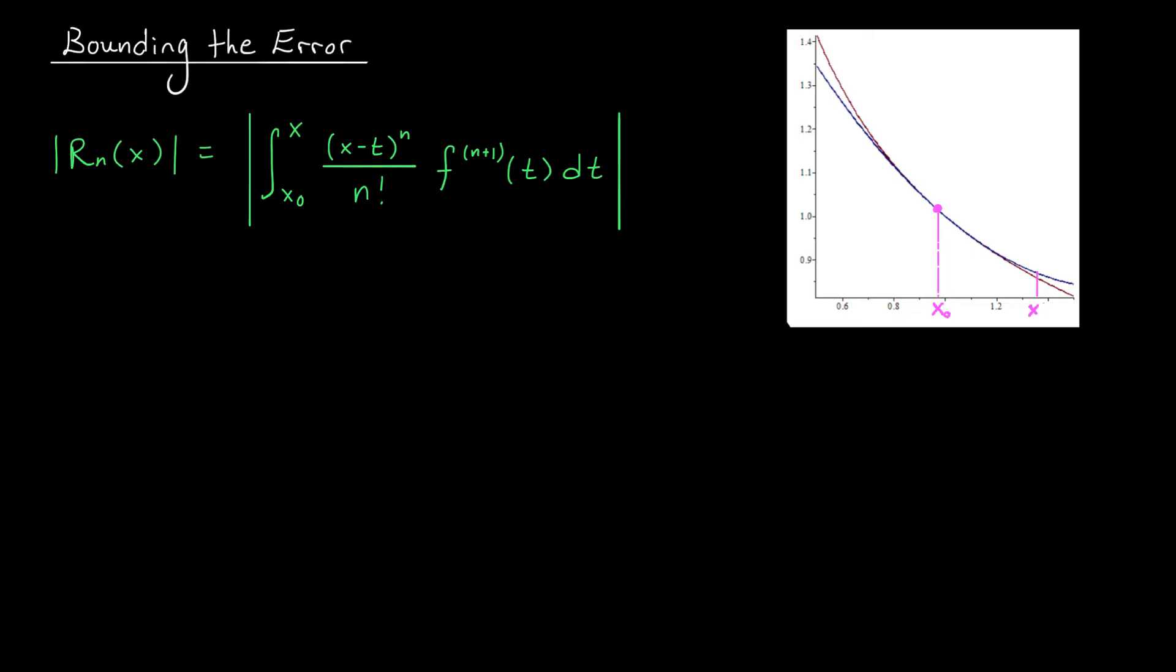To do this, we'll use our triangle inequality. It says that this expression is less than or equal to the integral from x0 to x of the absolute value of our integrand. Now I can split up my absolute value over the terms in this product, and so that's what I'll do. I'll write the integrand as the absolute value of (x minus t) all to the power of n divided by n factorial times the absolute value of the (n+1)st derivative dt.